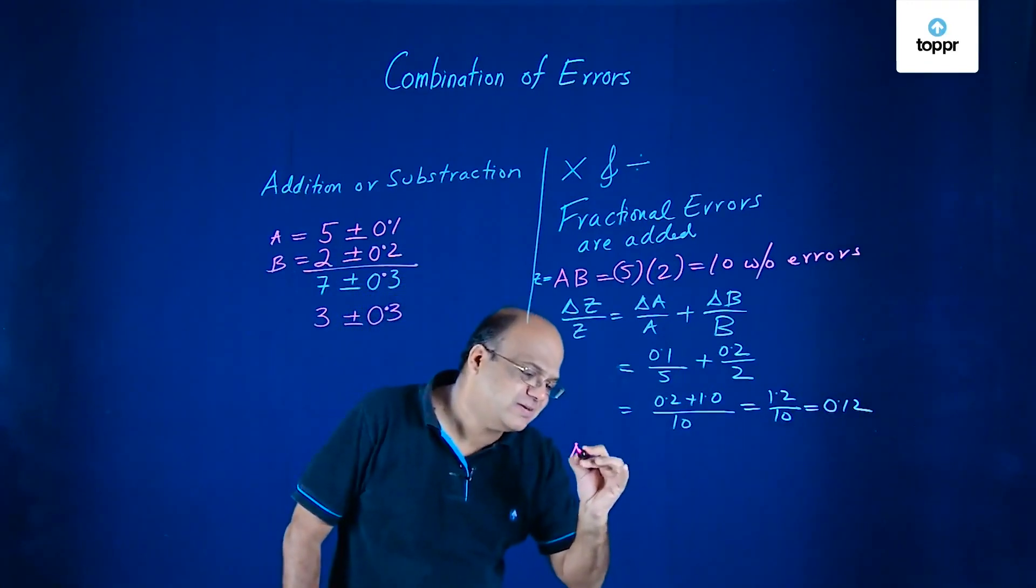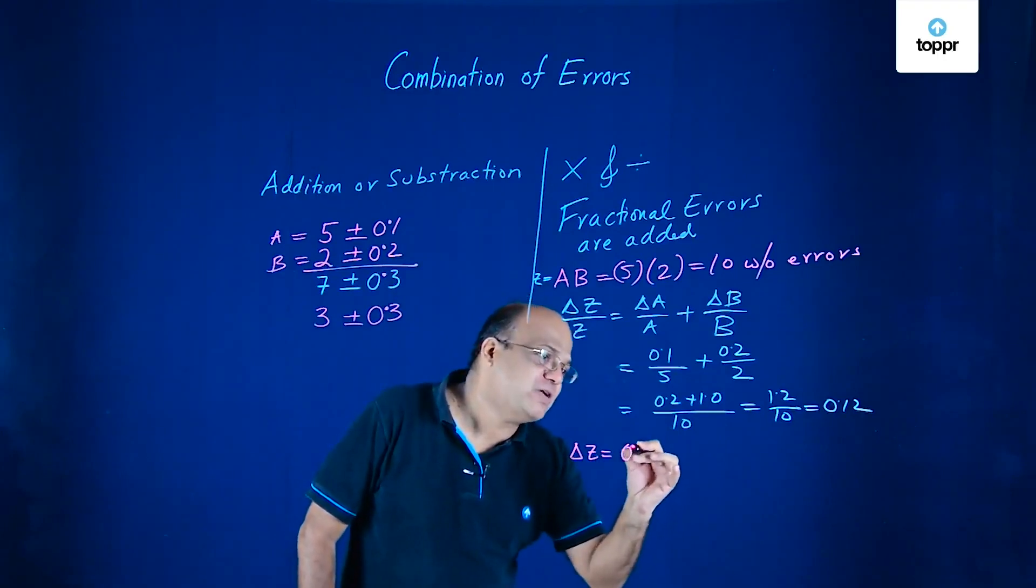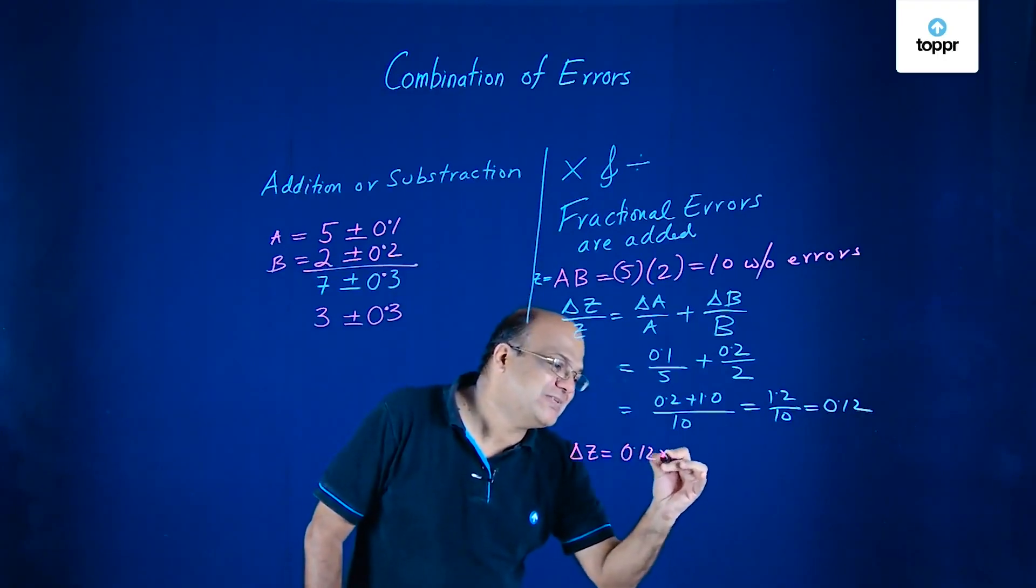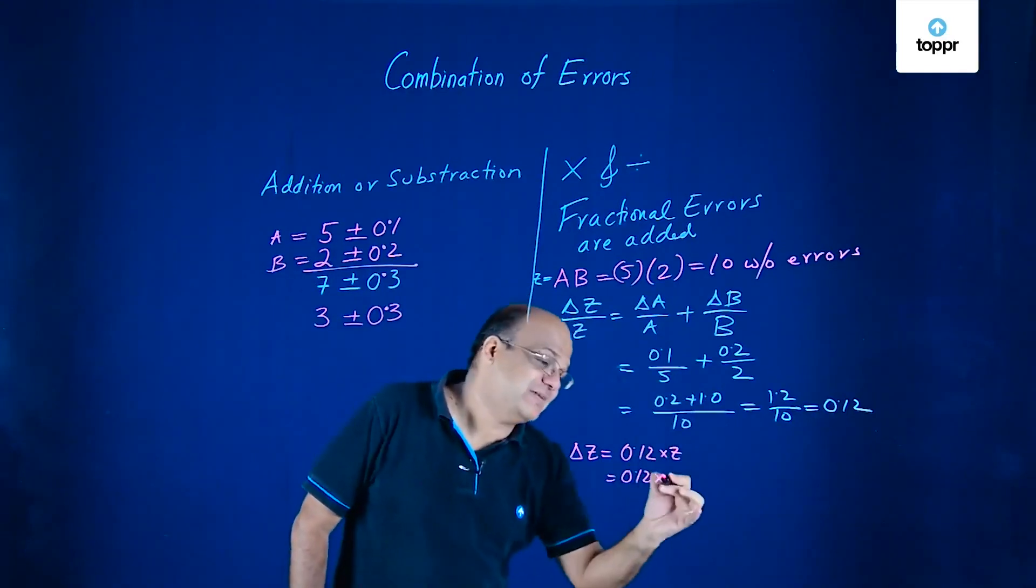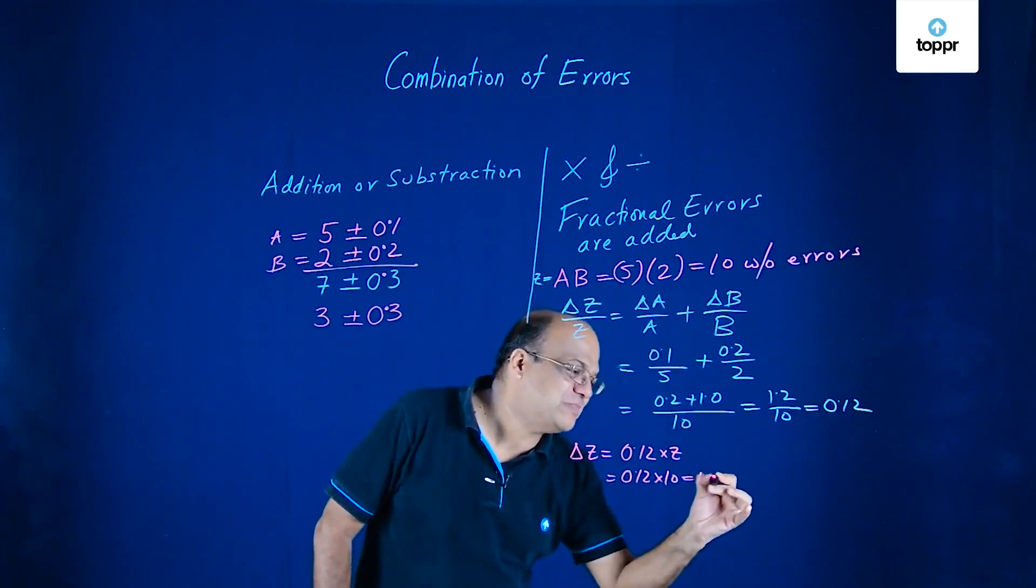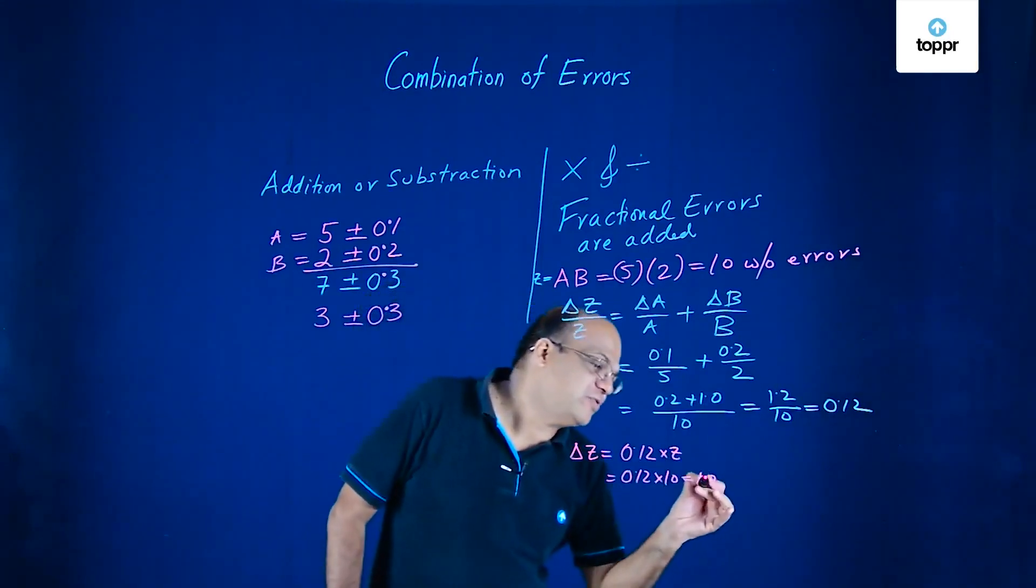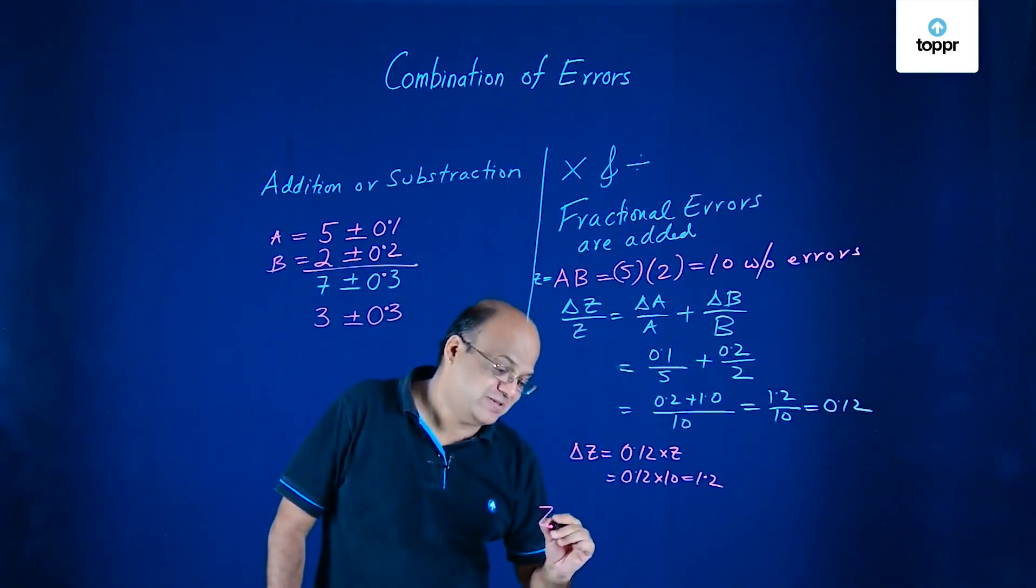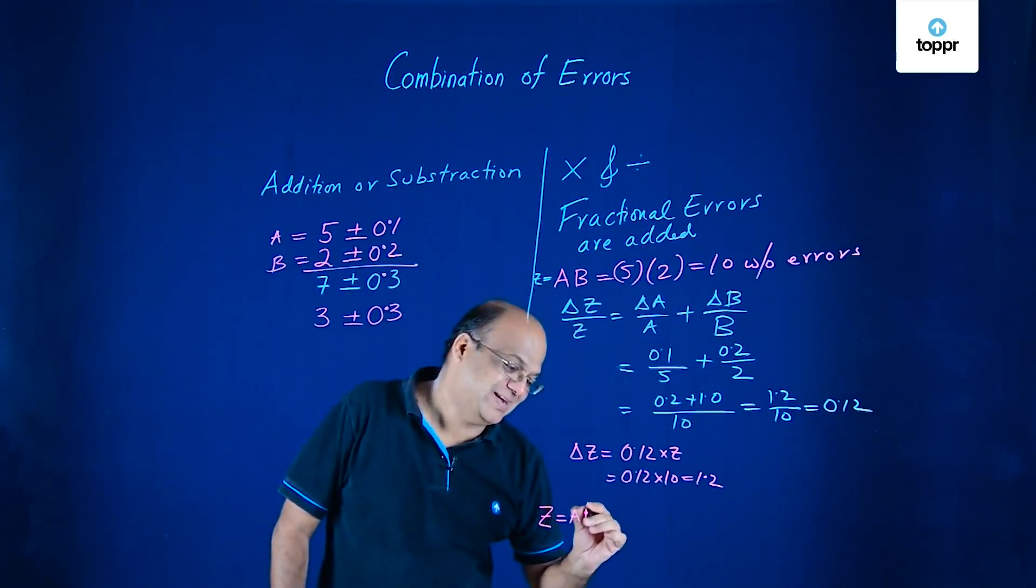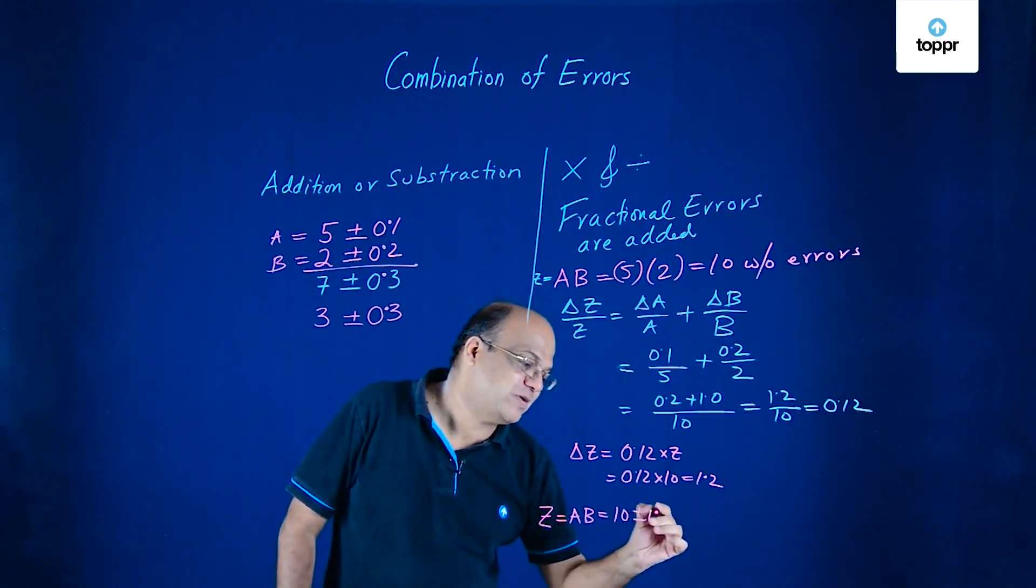So we got 0.12 as a fractional error in Z. So what will be error in Z? Error in Z will be 0.12 into Z. 0.12 Z is 10. So again we get 1.2. If you want we can round it off to 0 decimal. Well precisely you can leave 1.2. So now Z becomes that is AB. This is 10 ± 1.2.